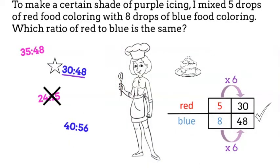Is 8 times 6 48? Yes, it is. That means that 30 to 48 is the same ratio as 5 to 8.